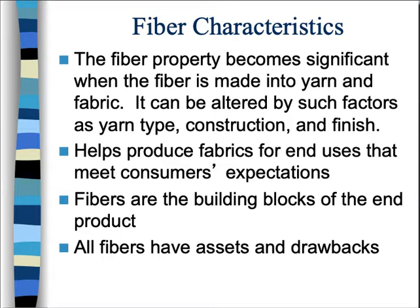If we think about something like cotton fiber — cotton is a natural fiber, it grows on a plant — it contains certain characteristics natural to it, but we can alter those so that they can become more suitable for the end product. We'll talk about how we can alter that in different ways to help produce fabric and uses that meet consumers' expectations. We choose a fiber for its end use based off of the characteristics that are natural to it, and then we can alter, enhance, or better adapt that fiber to meet those expectations.